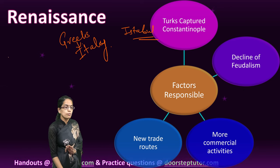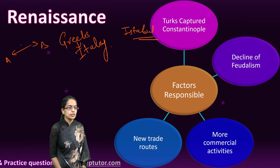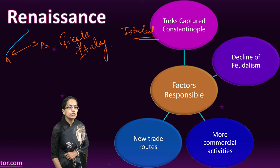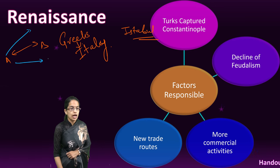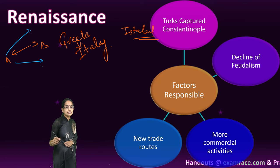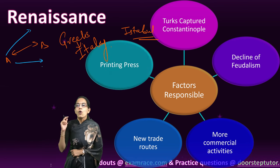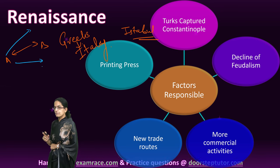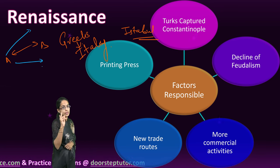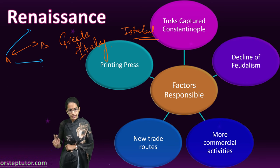If you have two places, A and B, with commercial activity between them, new trade routes would start to originate. With more commercial activities, new trade routes came up. Also, the most important factor was the invention of the printing press. With the printing press, learning and awareness came into existence.